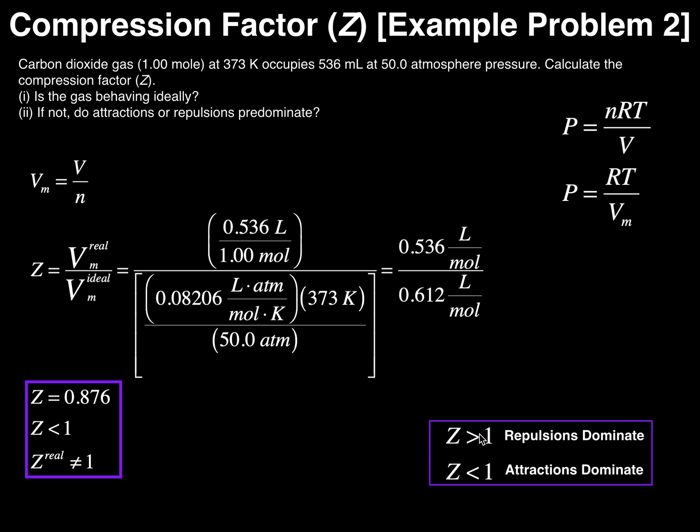If Z were greater than 1, and I think we had an example of that in the previous example, then repulsions would dominate. But in any case, hopefully this calculation of compression factor makes sense. It's a fairly simple calculation and it's very useful when you want to determine whether or not you have a real gas and whether repulsions or attractions dominate.